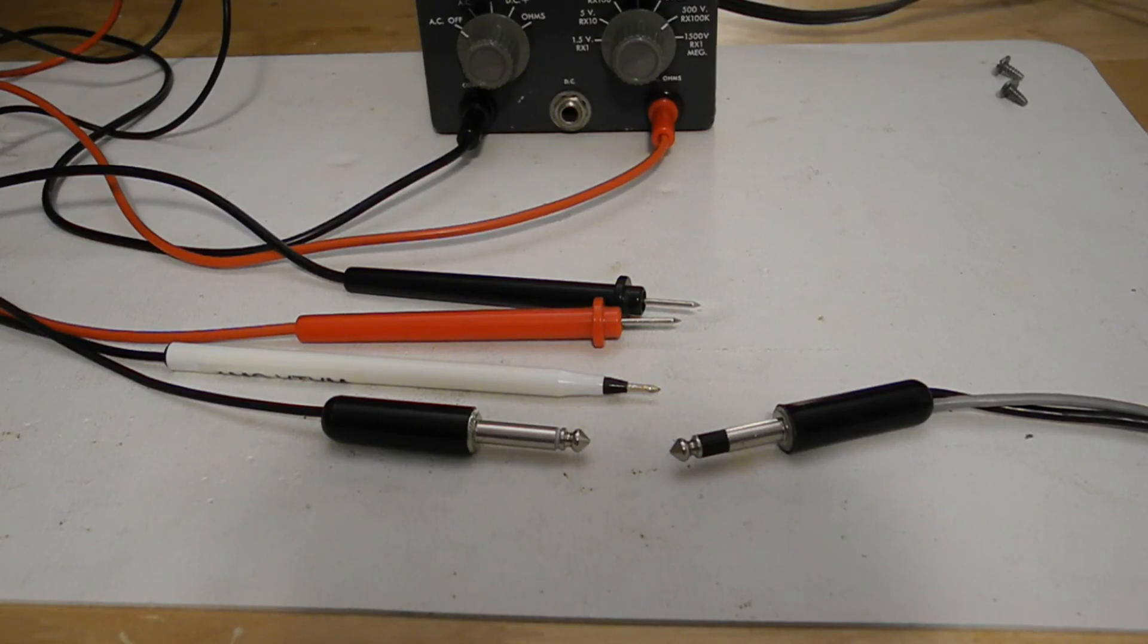Note that the original quarter inch jack would have had a larger spacing between tip and ring. These are hard to find, so I used a standard one, but it's likely not safe to use up to the full 1500 volt input rating of the original test leads.